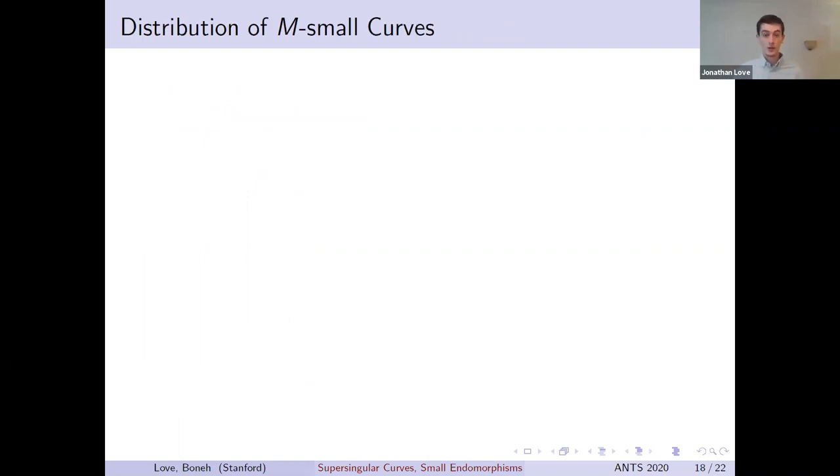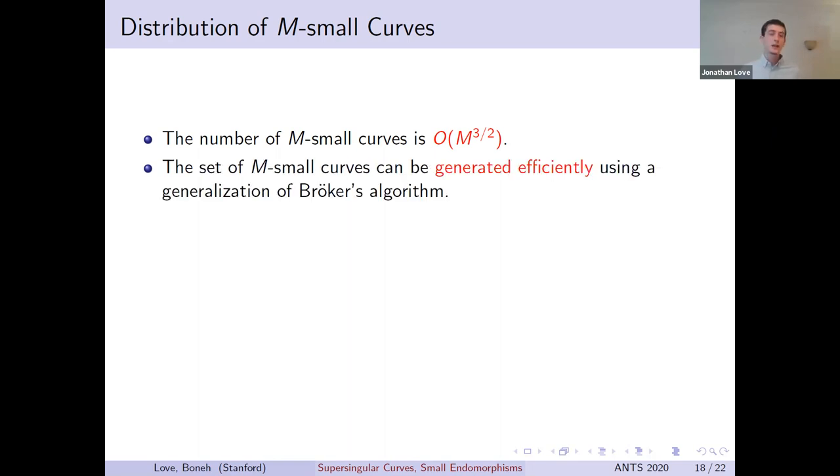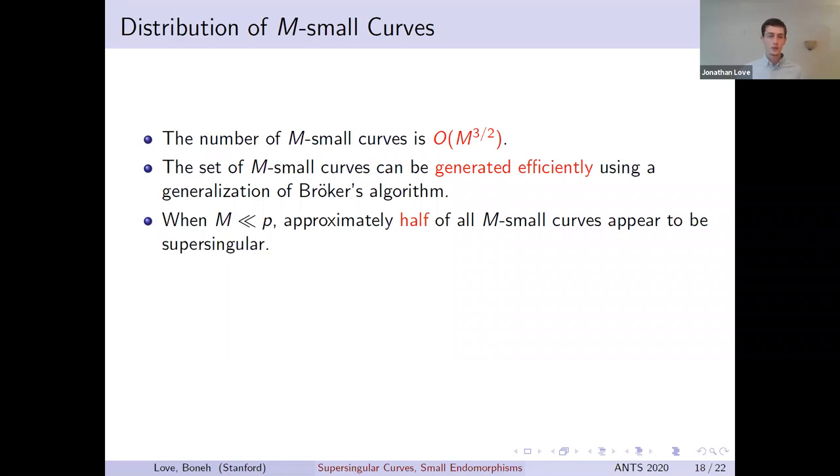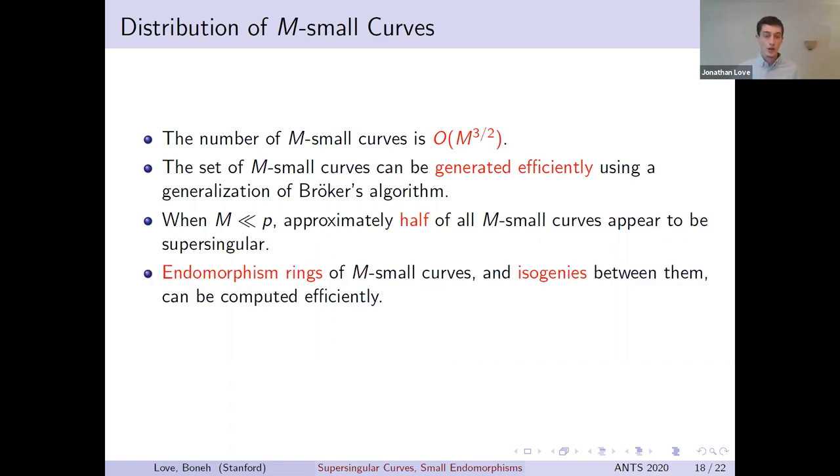There's a lot that we can say about the set of m-small curves. For one, we know roughly how many there are. The number of m-small curves grows at most on the order of m to the 3/2. In fact, we can actually compute the entire set of m-small curves in time polynomial in m using a generalization of Bröker's algorithm. Now earlier I said that a randomly selected elliptic curve is very unlikely to be supersingular, but this doesn't hold for m-small curves. In fact, experiments and heuristics both imply that roughly half of all m-small curves are supersingular, so this makes them a very rich source of supersingular curves. It's true that m-small curves are unfortunately not hard curves in the above sense, but on the flip side this means that they form a class of curves for which we understand their endomorphism rings and isogenies quite well.